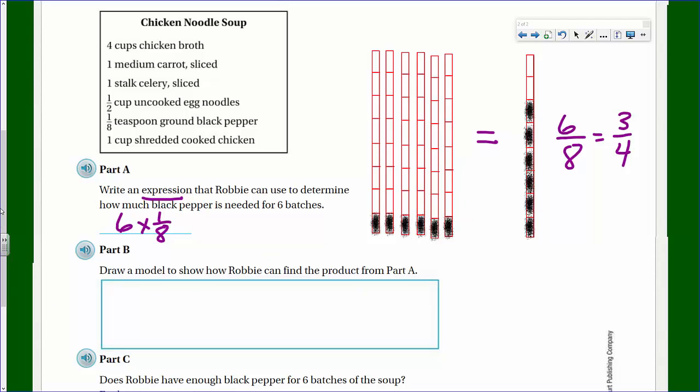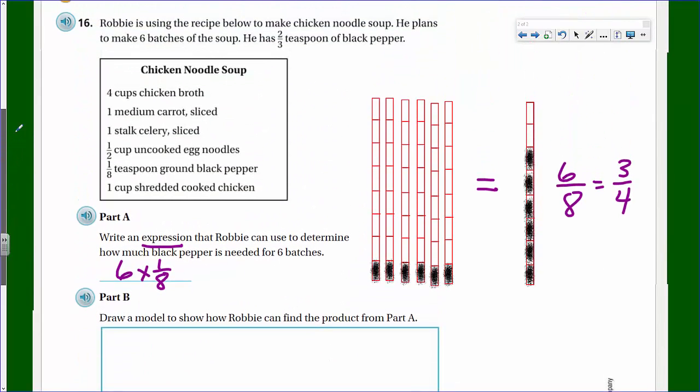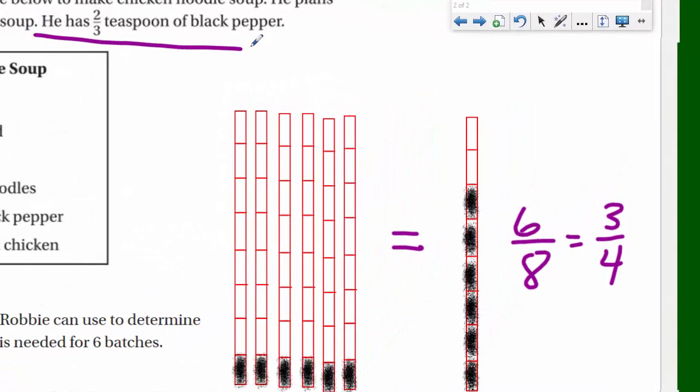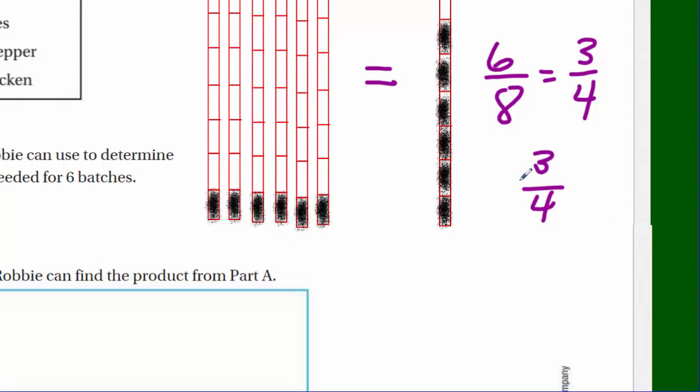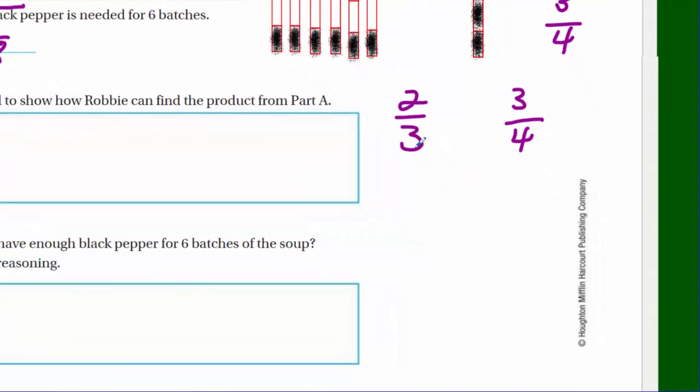Part C: Does Robbie have enough black pepper for 6 batches of the soup? Explain your reasoning. Does he have enough? Well, he had 2/3. That's how much he has. I'm assuming he doesn't have any other black pepper. That's the idea of this problem. So if he only has 2/3, the question is that 3/4 is how much he would need for 6 batches. He has 2/3. So what we're really doing here is we're evaluating 3/4 and 2/3. If the 3/4 is smaller than the 2/3, then we know he has enough. But if the 2/3 is smaller than 3/4, then he doesn't. So how can we evaluate those?